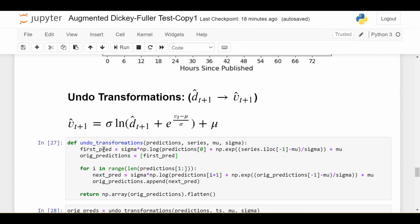Once you're confident with that, write the code. To match up the code to the formula, we see the prediction is given by sigma times log of prediction[0], which is D_(t+1) hat, plus exponentiated series minus mu over sigma, all of that plus mu. This mathematical form matches up to the code I've written.